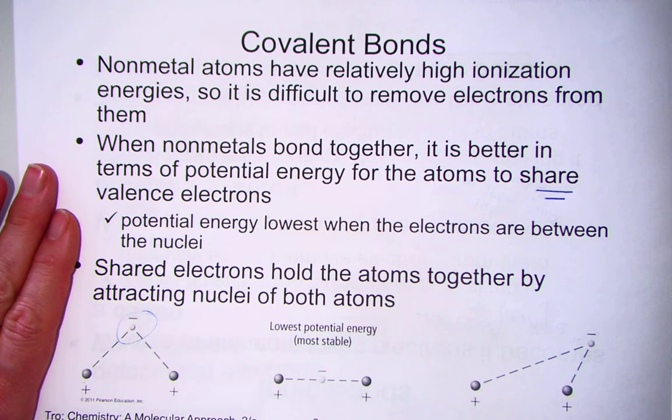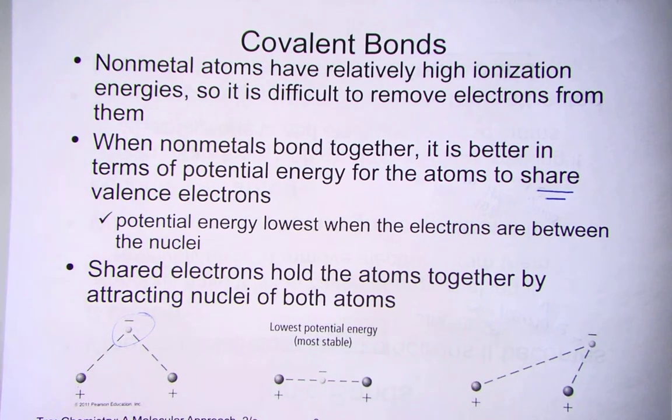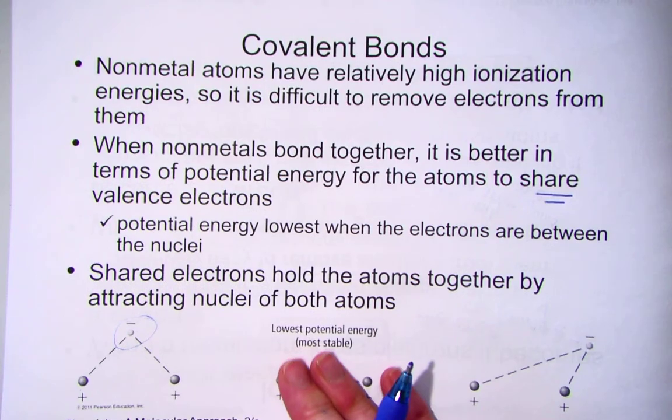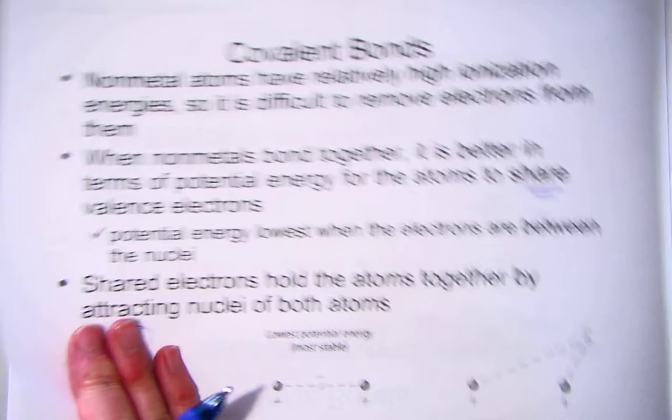The most stable arrangement occurs when I take those charges and alleviate any kind of potential repulsive force, and you do that simply by overlapping orbitals and sharing the pair of electrons.